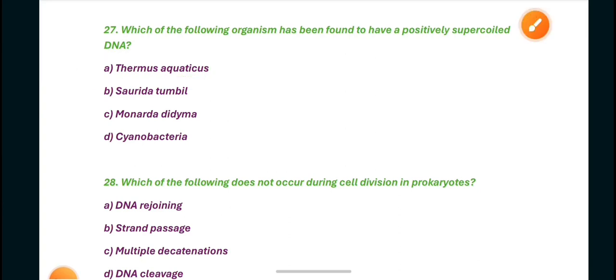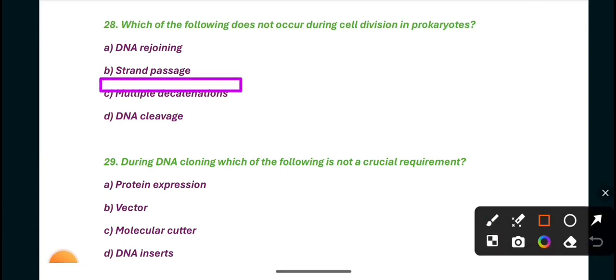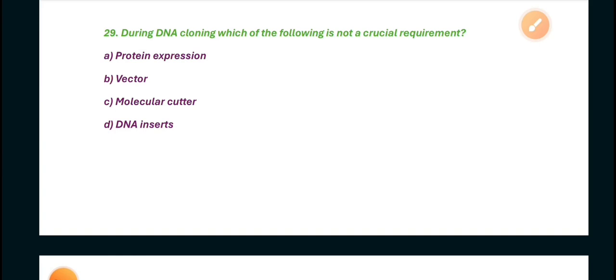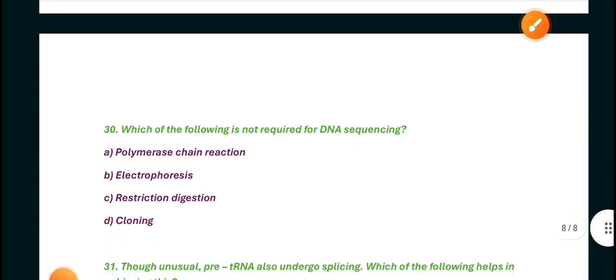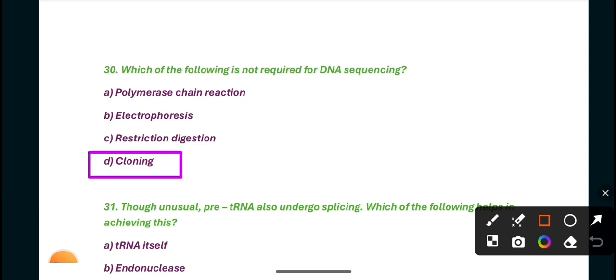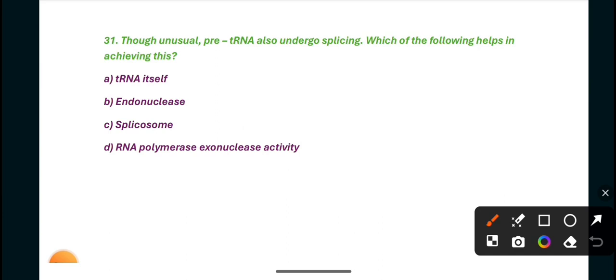Question 28: Which of the following does not occur during cell division in prokaryotes? C is the right answer, multiple decatenation. Next, during DNA cloning, which of the following is not a crucial requirement? Protein expression is the right answer. Question 30: Which of the following is not required for DNA sequencing? Cloning is the right answer. DNA sequencing is the process of determining the precise order of the nucleotides within a DNA molecule. Question 31: Pre-tRNA also undergoes splicing. Which of the following helps in achieving this? Answer is B, endonuclease.